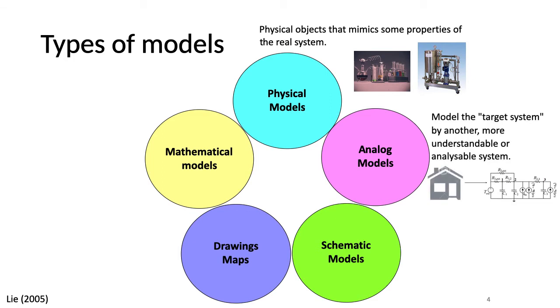Analog models model the target system by another more understandable or analyzable system. For example, representing the building heat dynamics using a resistance capacitor network model.